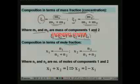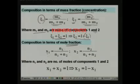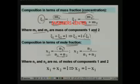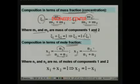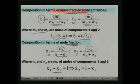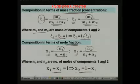Composition can also be expressed in terms of mole fraction. Instead of talking about masses, we talk about the number of moles. Mole fraction of component 1, x_1, is the ratio of the number of moles of component 1 divided by the total number of moles of components 1 and 2 in the solution. Similarly, mole fraction x_2 is given by n2 divided by n1 plus n2, where n1 and n2 are the number of moles of components 1 and 2. Just like mass fraction, it can easily be shown that x_1 plus x_2 equals 1, or x_2 equals 1 minus x_1.